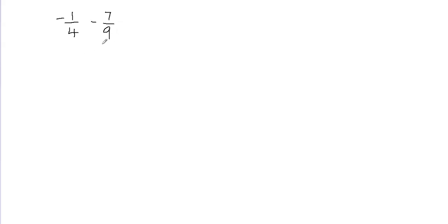To find the common denominator, what I'm going to do is multiply both the fractions by a number. Basically what we do is we find the least common multiple of the denominators. So I have 4 and 9. You list down the multiples of 4 and 9 and then look for the number which is smallest and common in both of them. That's always an option to find the least common denominator.